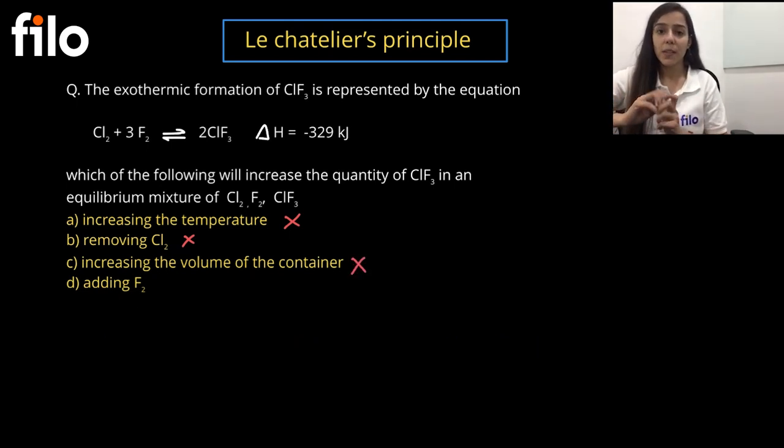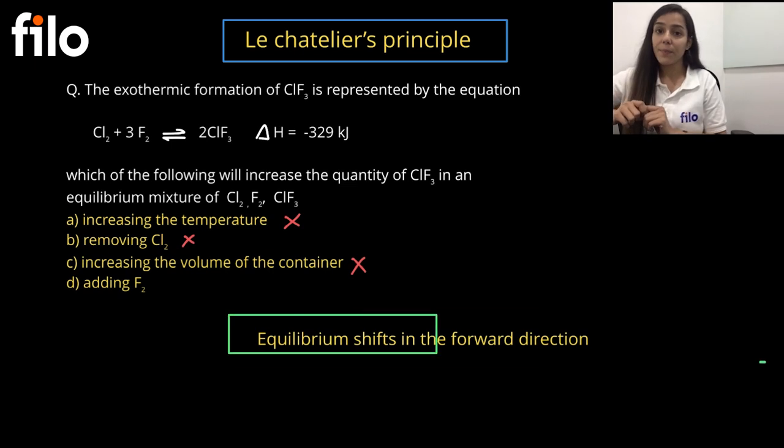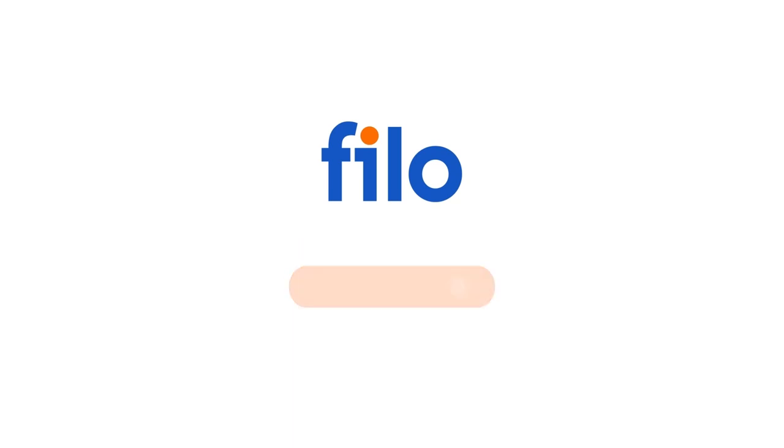Another one is adding F2. If I increase the concentration of reactant, they will be able to react more to form product. So this is the condition in which our equilibrium will go forward direction. As we discussed in the second option also about concentration, this is our correct answer out of all of these. So I hope you understood about Le Chatelier principle and how to apply it in terms of temperature, pressure, volume and the concentration.